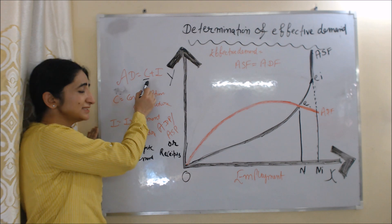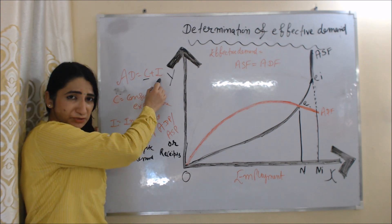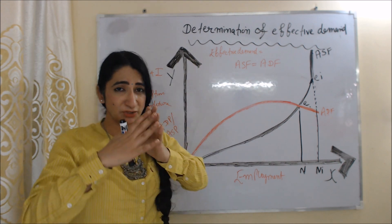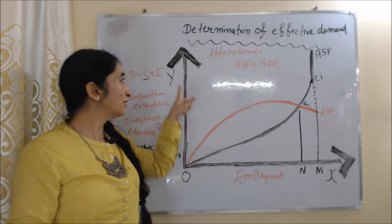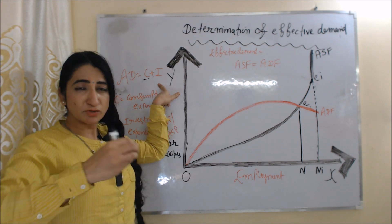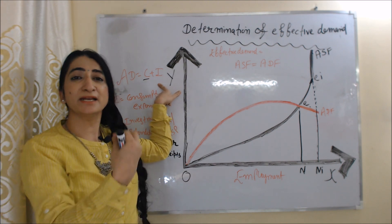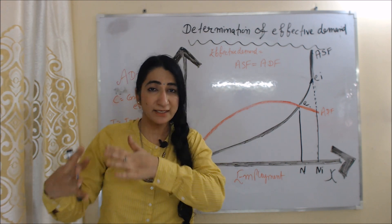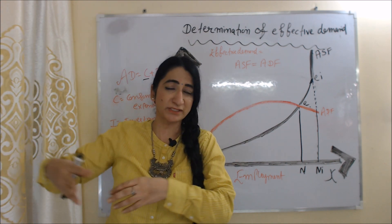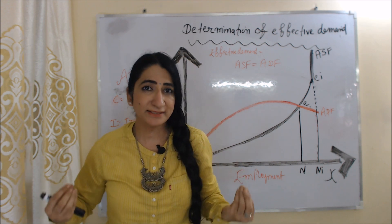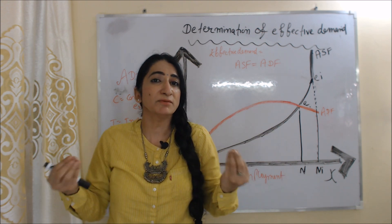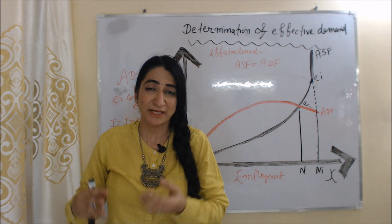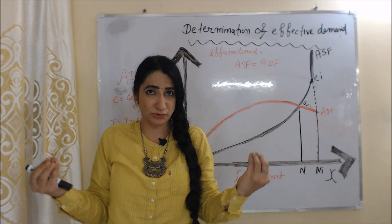Aggregate demand equals C plus I, where AD is aggregate demand, C is consumption expenditure, and I is investment expenditure. In the short time period, we cannot change our consumption, but we can change our investment. So by increasing investment, we can increase aggregate demand. But the problem is that aggregate demand is already very low — the market is very down. At this time, the private sector will not invest because their main motive is profit. That is why government intervention is a must — this theory gives great importance to government.